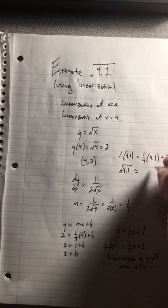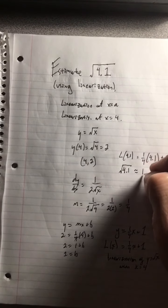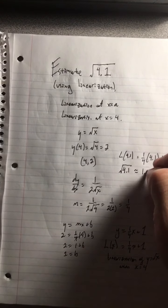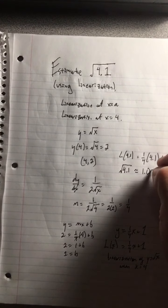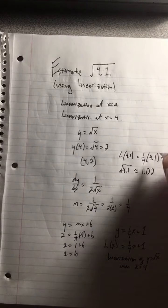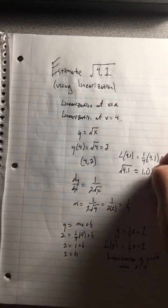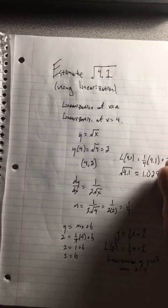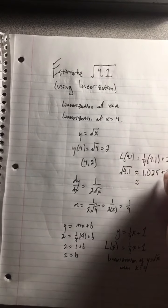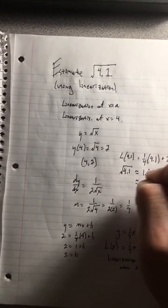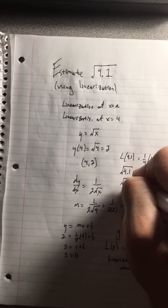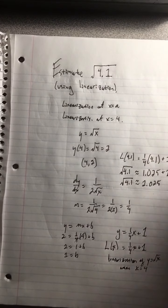That's going to be, well, 1/4 goes into 4.1, and so we say it's about 2.025. That's our estimate for the square root of 4.1.